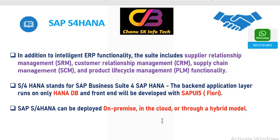This is all about SAP S4 HANA. S4 HANA is the fourth generation business suite, and HANA stands for High Performance Analytic Appliance. The HANA database works on both ECC version and S4 HANA version. However, ECC databases such as Oracle, IBM DB2, and MSSQL will not run on SAP S4 HANA — they cannot be deployed. SAP S4 HANA is the intelligent ERP.